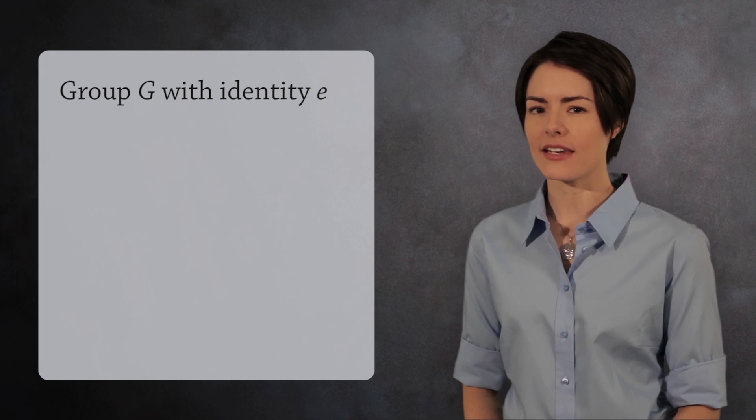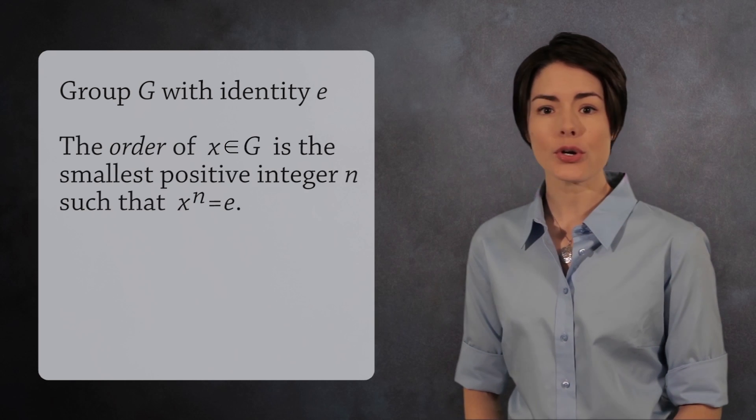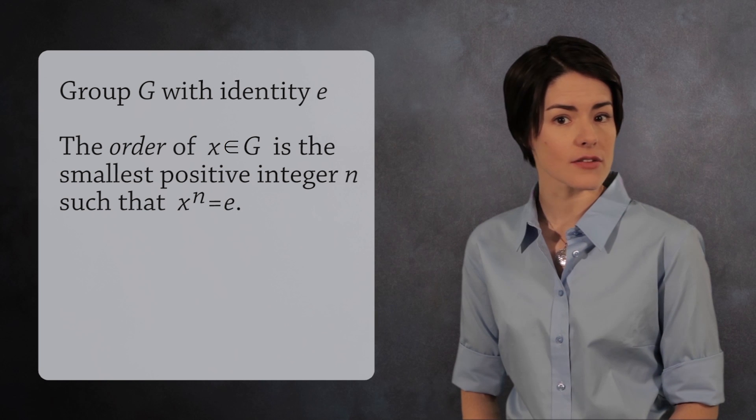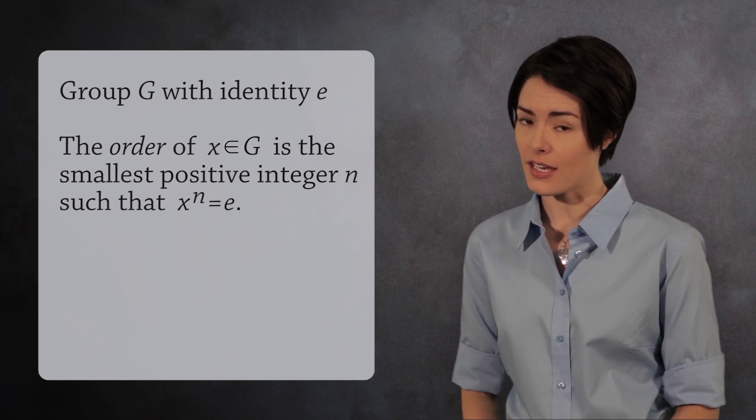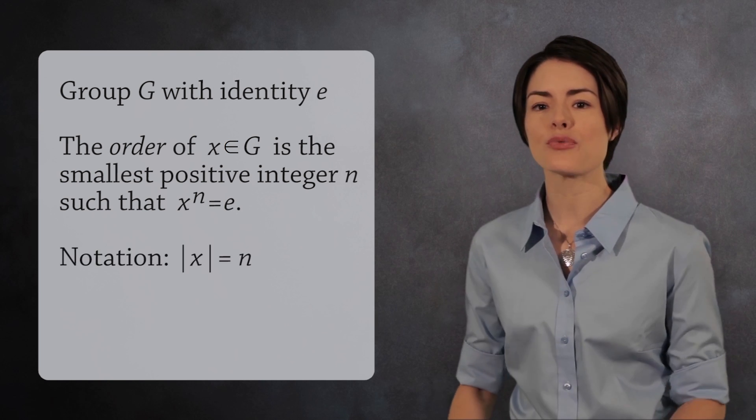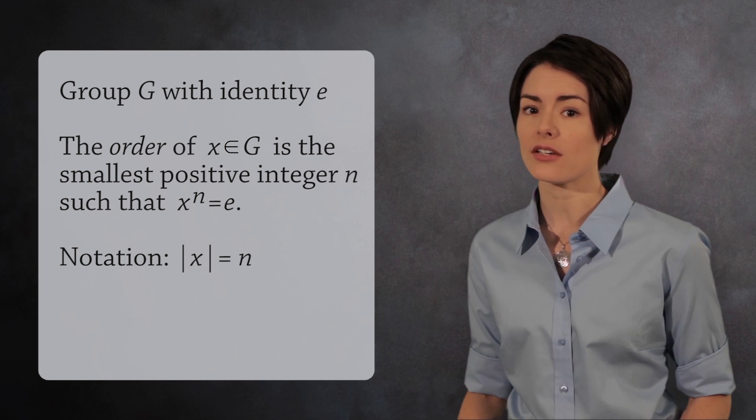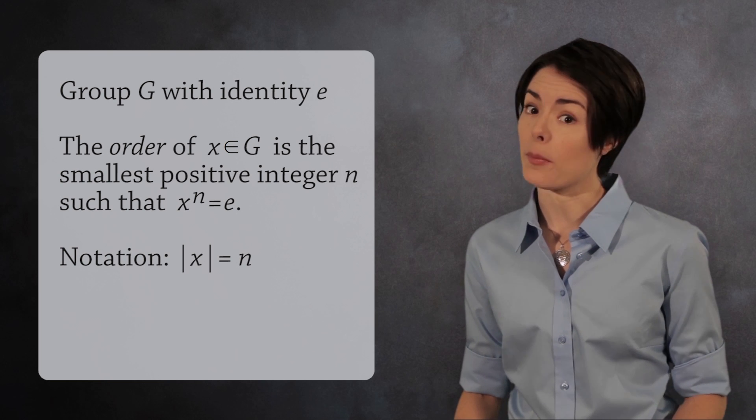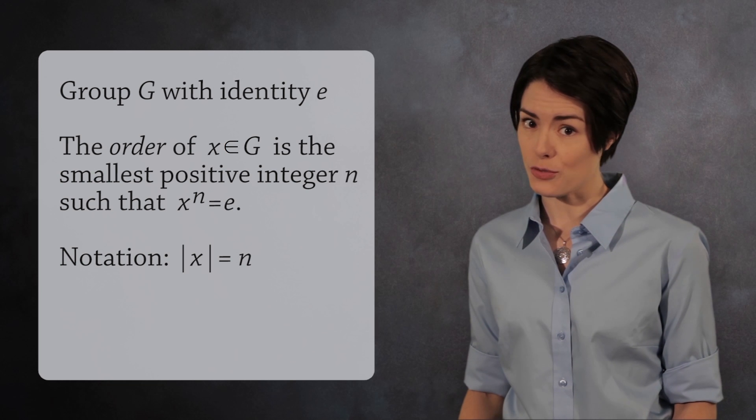Suppose we have a group with an identity element e. The order of an element x is the smallest positive integer n such that x to the n equals e. You write the order of x using the same notation as the absolute value, but remember this notation means something different in abstract algebra.